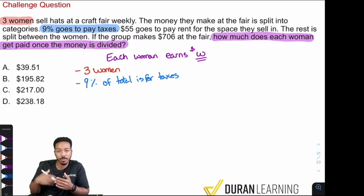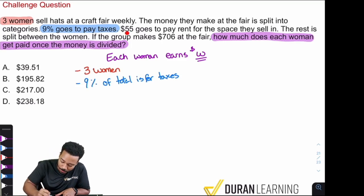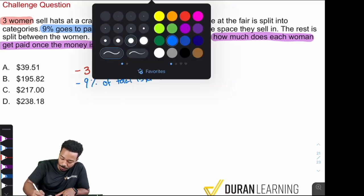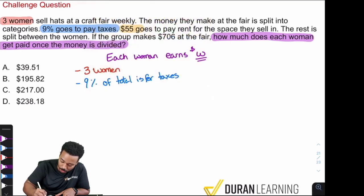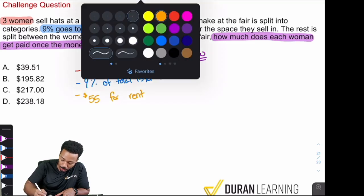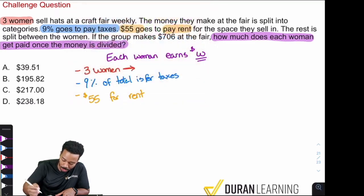Let's write that out here. We see here that 9% of the earnings go for taxes. So here we go. 9% of total is for taxes. And we can imagine that that's going to be taken away from the total, right? If you're taxing something, that means you're taking it away from whatever you have. And so next, $55 goes to pay rent for the space they're selling in. So I'm going to highlight that as well. $55 is to pay rent. And then it says the rest is split between the women.